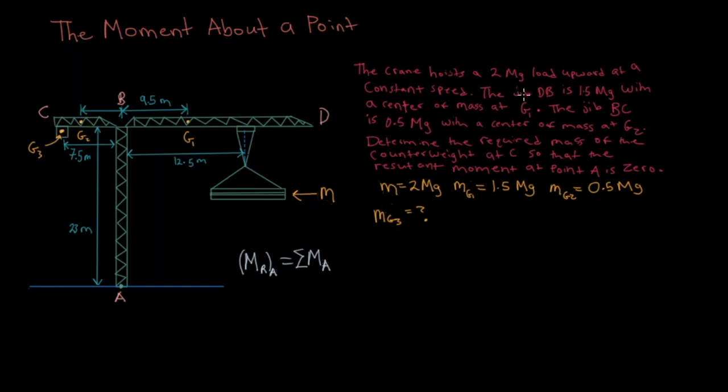The question is asking: the crane hoists a 2 megagram load upward at a constant speed, and the jib DB is 1.5 megagrams with the center of mass acting through g1, and the jib BC is 0.5 megagrams with the center of mass acting through g2.